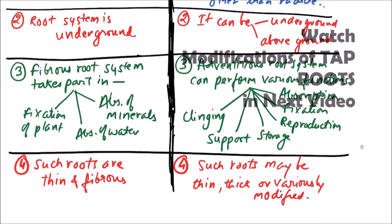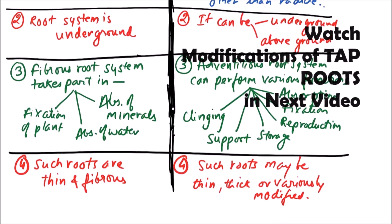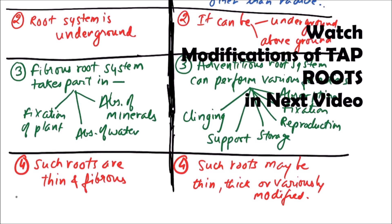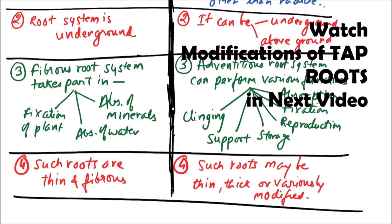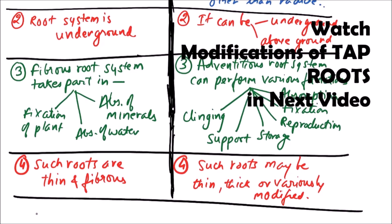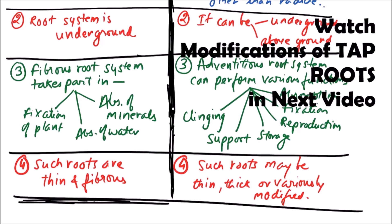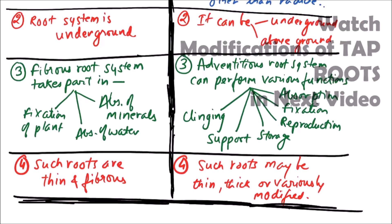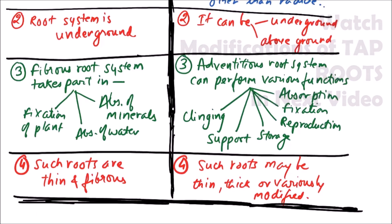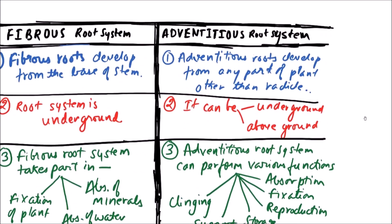So these are the various points of differences between the adventitious and fibrous root system. Thanks for watching this video.